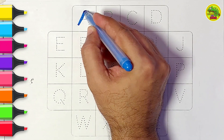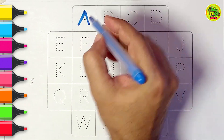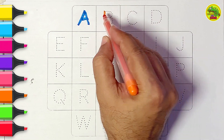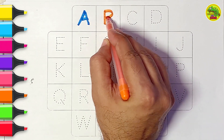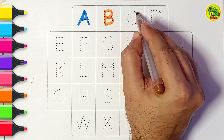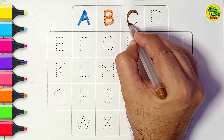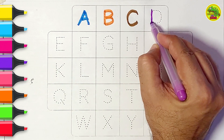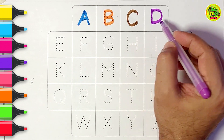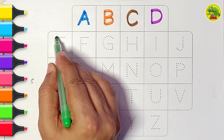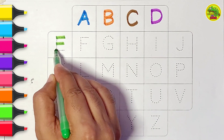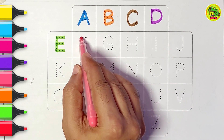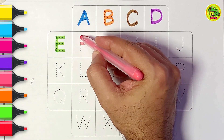A, a is for apple, blue color. B, b is for ball, orange color. C, c is for camel, brown color. D, d is for doll, purple color. E, e is for egg, green color. F, f is for frog, pink color.